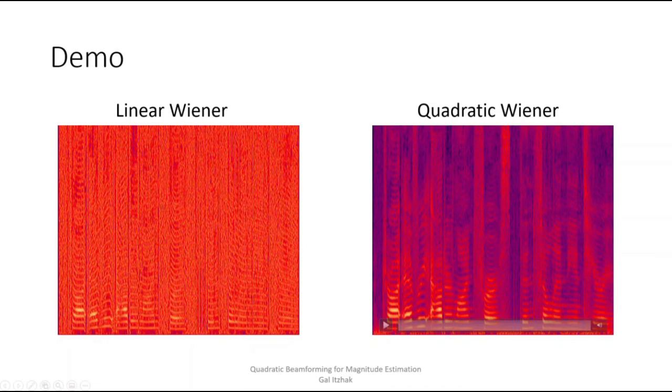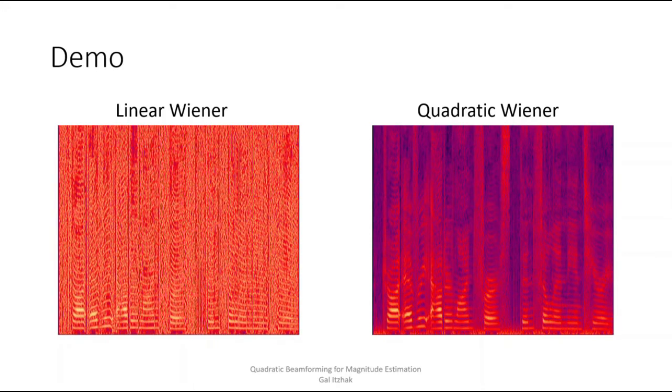So now let's listen to the non-signals with both versions of the Wiener beamformer. Let's begin with the linear Wiener beamformer. Draw every outer line first, then fill in the interior. Which sounds very noisy.